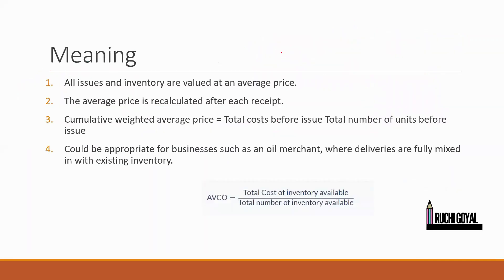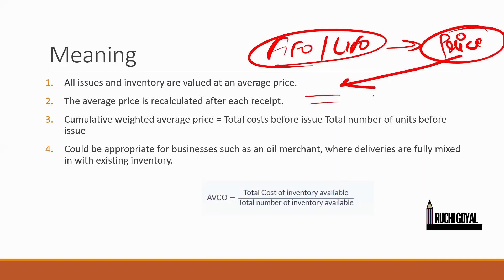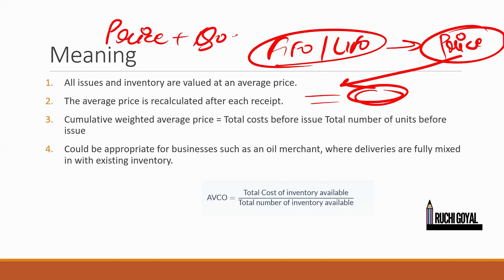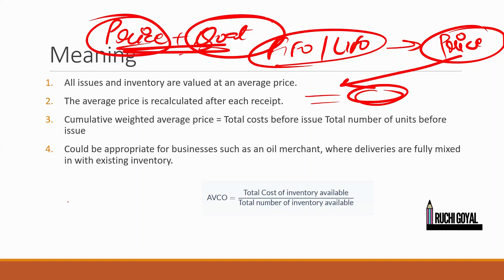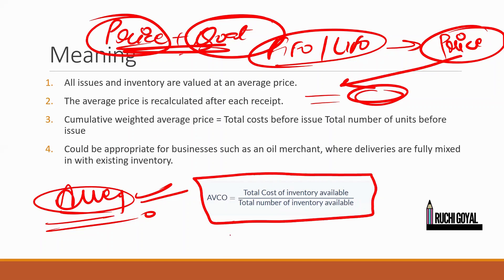Now, what is the meaning? In the previous methods we were only concerned about the prices - we used to calculate the issue and the closing based on price. But in this method, we are not only concerned about the price, we are also concerned about the quantity. So we take both the price and the quantity and we calculate the average price. This is the basic difference between this and the other methods. The formula you need to remember is the key part of this particular method.